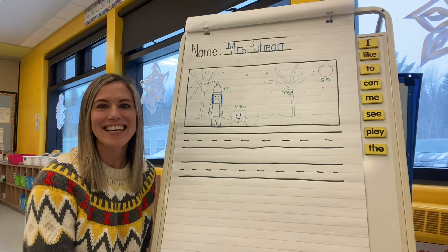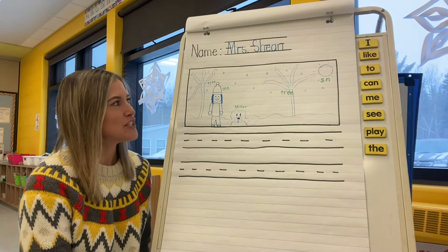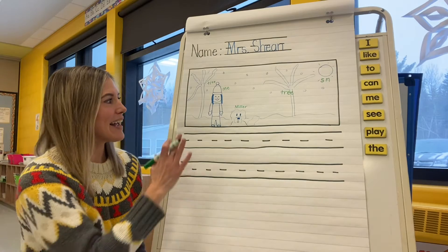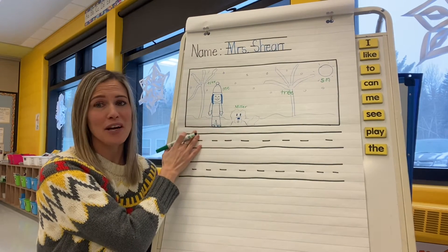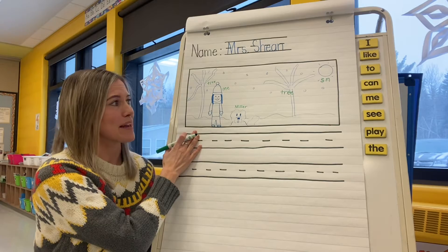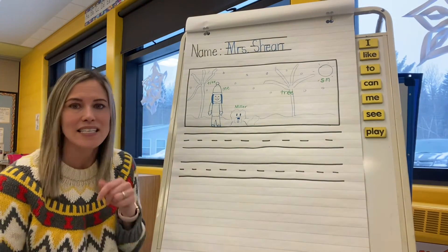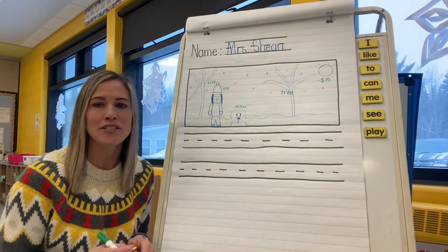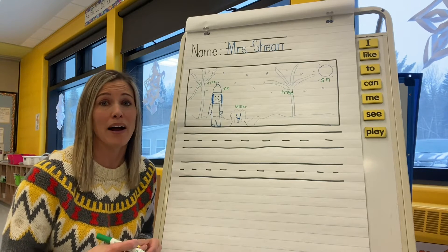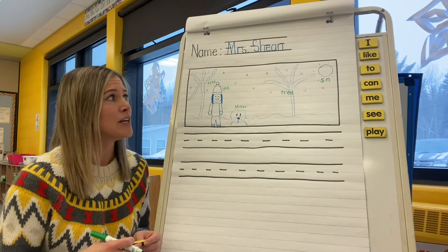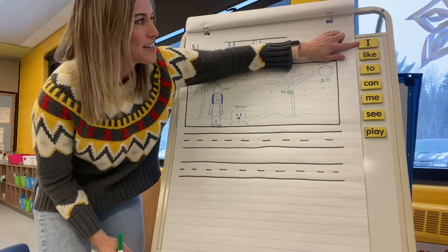Hi boys and girls. Today I'd like to do a writing mini lesson with you. So I have my illustration done here. I've also gone ahead and labeled, and we'll talk about that in a minute. But I also have all of our sight words listed to the side. So as you know, when you're writing at home, it's really helpful to have our sight words close by to refer to. So let's just go through them and review — we'll read them together.